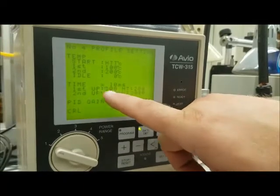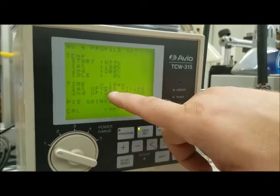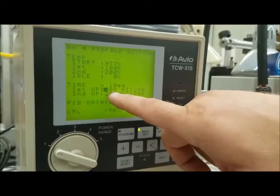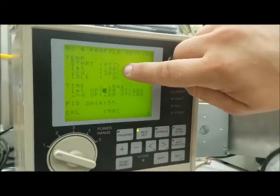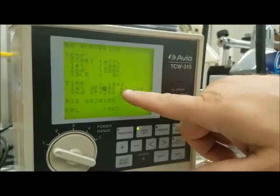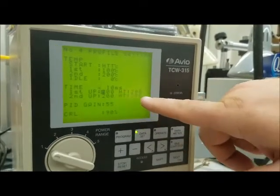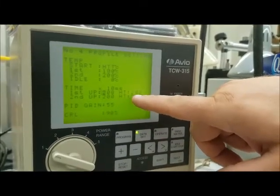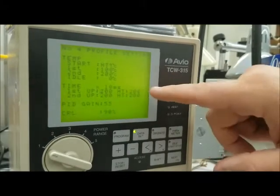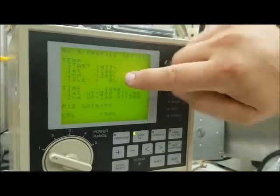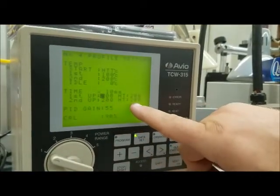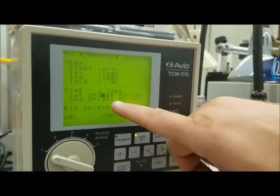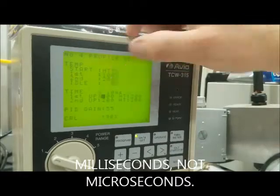First uptime is the ramp—how many seconds it takes to ramp from ambient temperature to the first hold temperature. HT stands for hold time, the time period it will hold at that first temperature. Under the second line, you have another ramp time and hold time. Again, these are in microseconds times whatever that number is.